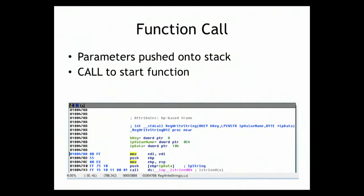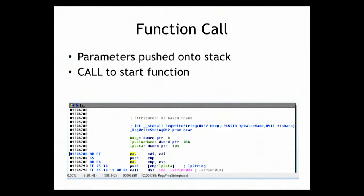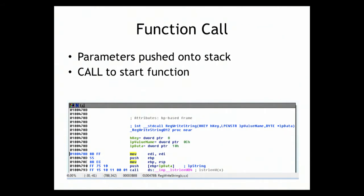Remember how functions are called in assembly: you push arguments onto the stack with push instructions, then call. You'll always see a series like push, push, call. Before a call you always have pushes — or sometimes a move to an address calculated from ESP or EBP, which amounts to the same thing. So if you see a call to something named 'string_length,' one of the pushed values is a pointer to the string, and the other might be a starting offset for a substring.